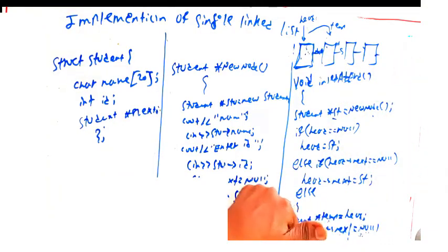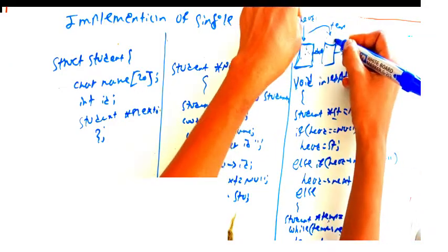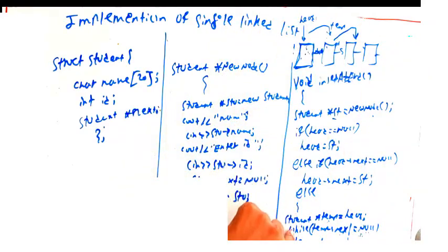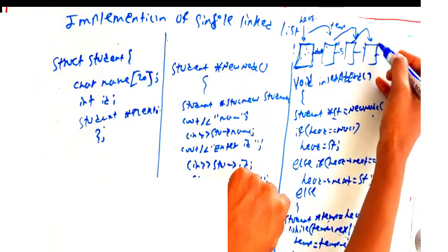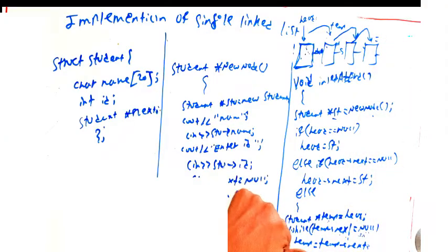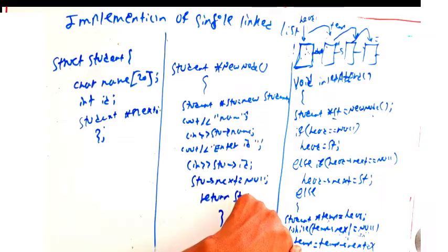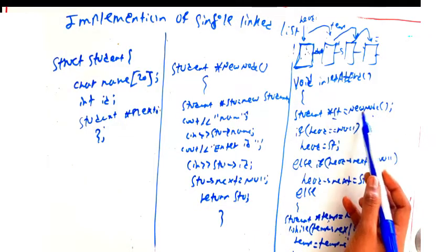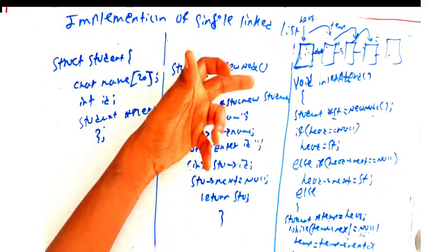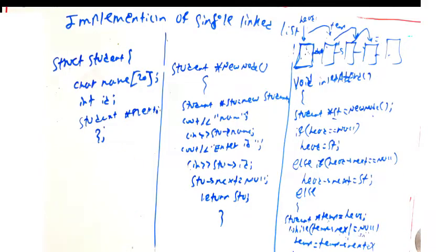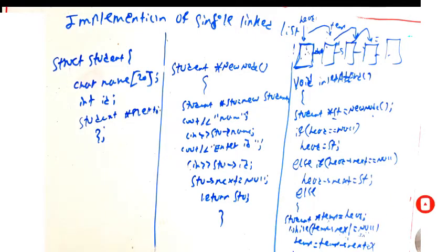If you have a single instruction, then you will be able to complete the insert. Finally, temp next is equal to null — okay — so that is how we can insert a new node at the end. Please like, subscribe, and share this YouTube channel. Future videos will cover insert at the beginning, at the end, and at any location. Welcome, and bye bye.